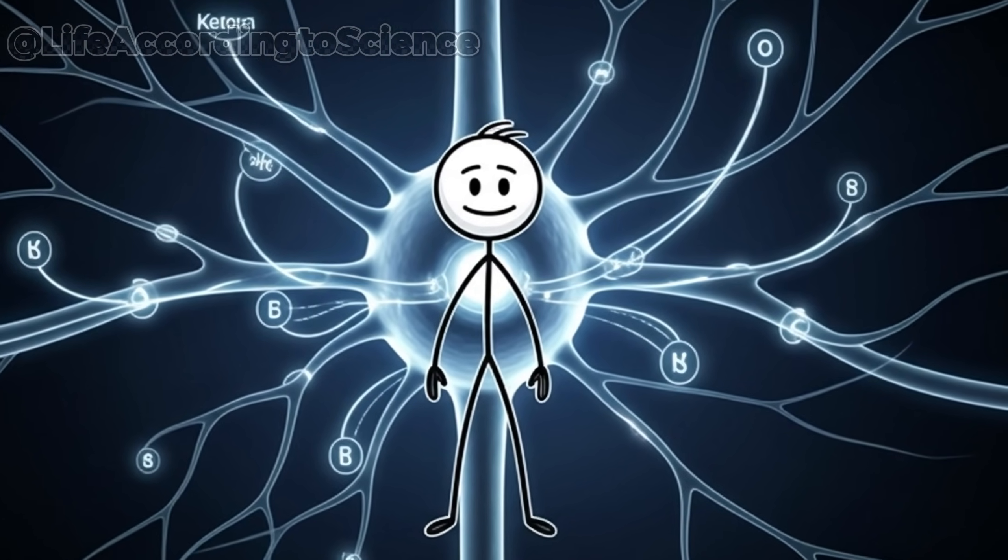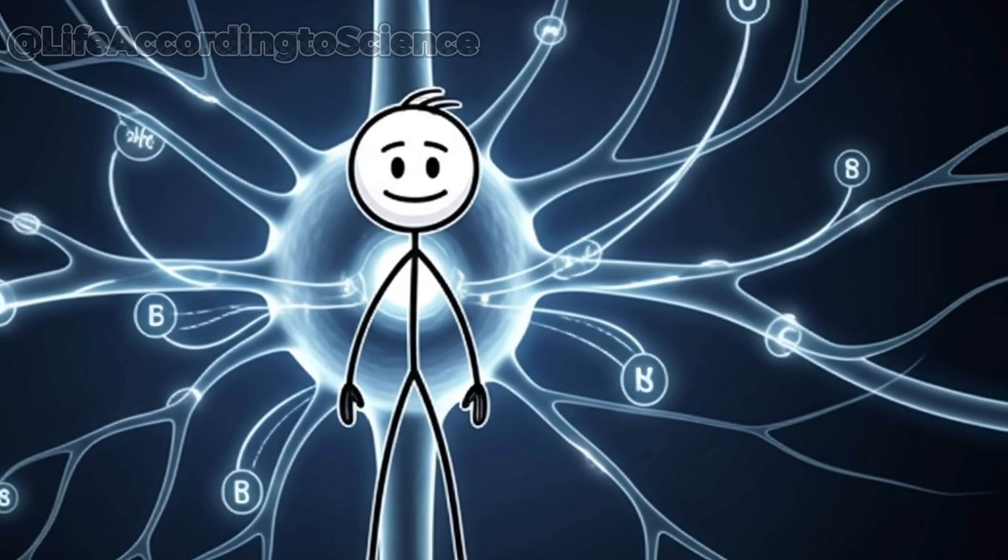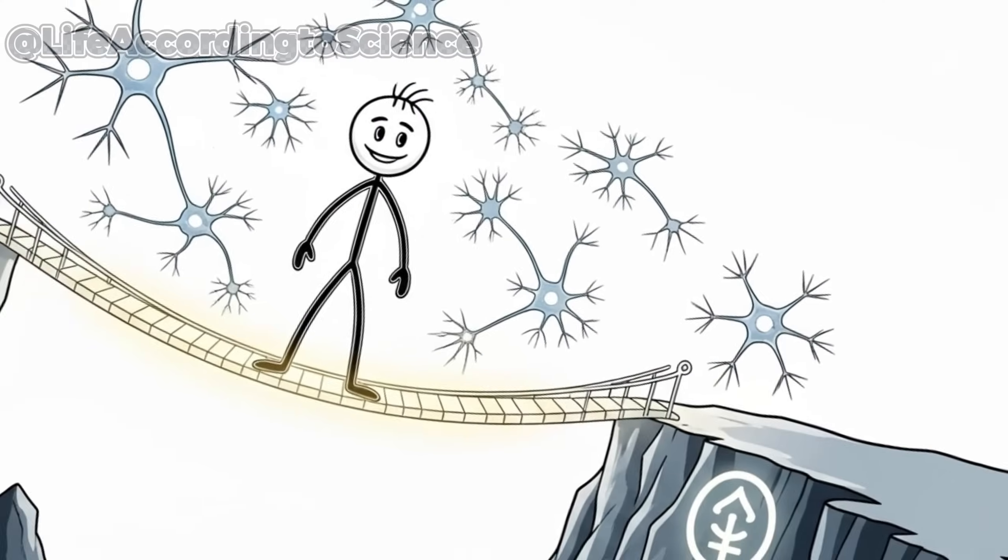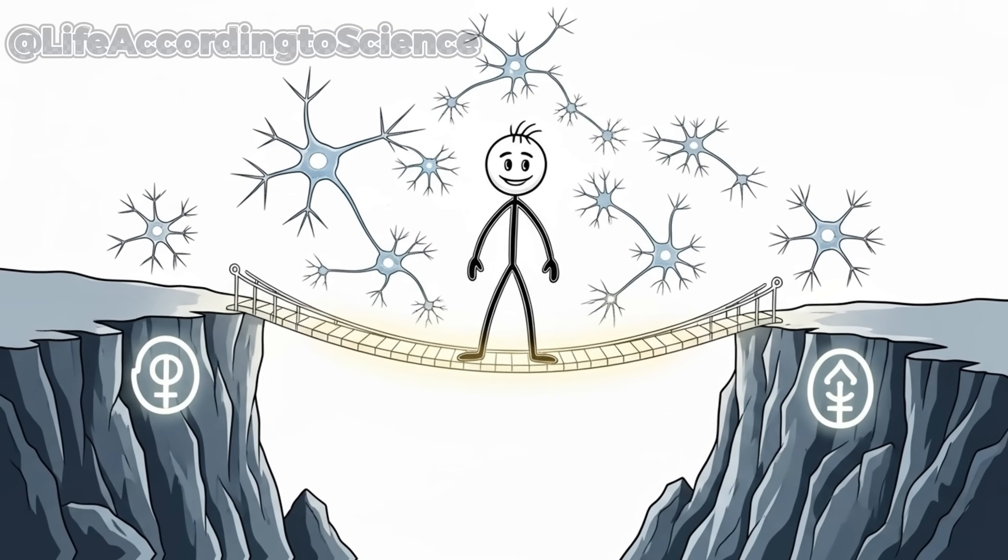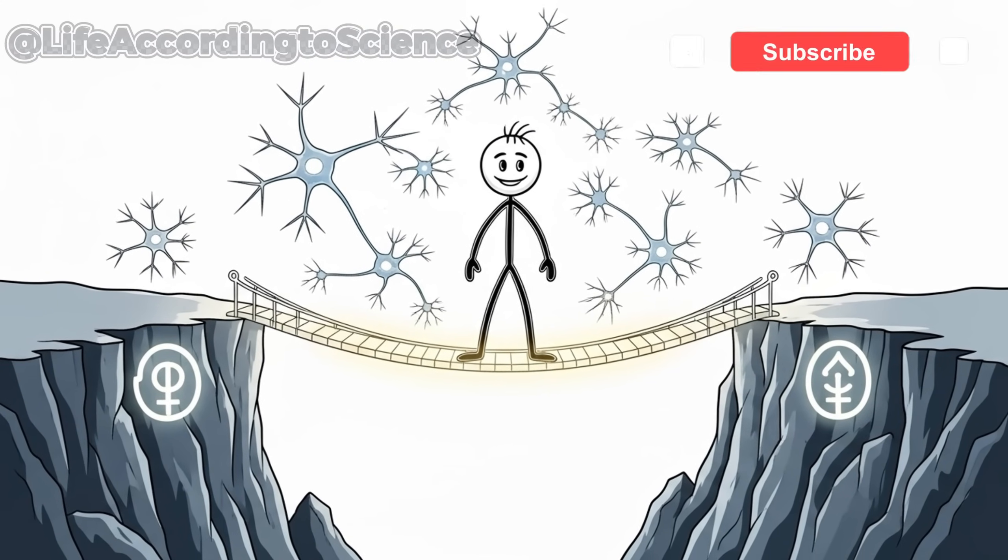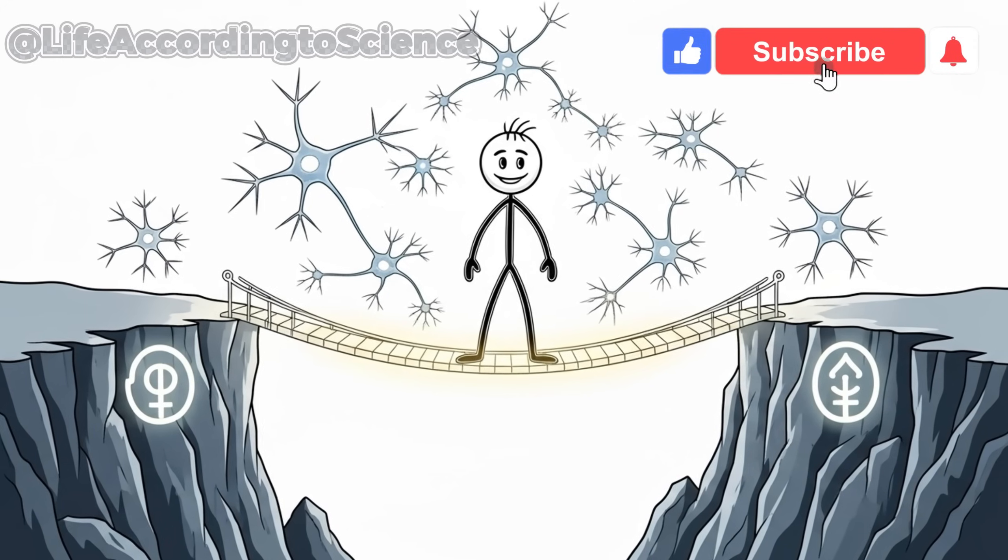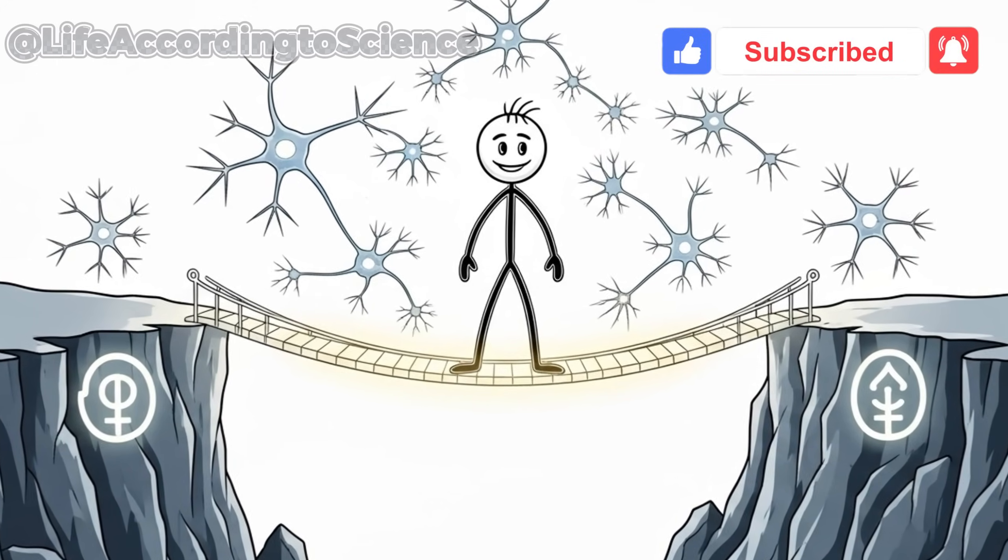Within hours, your neurons start switching to this cleaner, longer-lasting power source. Studies show that ketones not only replace glucose, but also enhance mental clarity, improve focus, and even protect against neurodegenerative diseases.